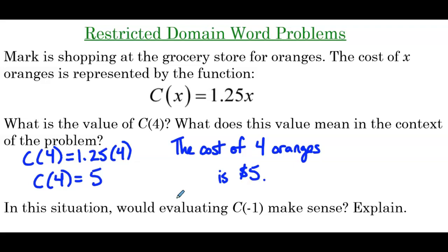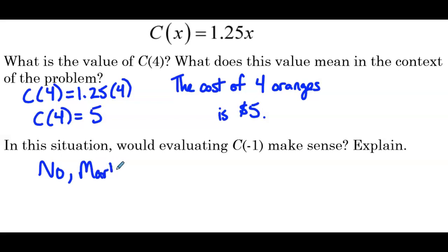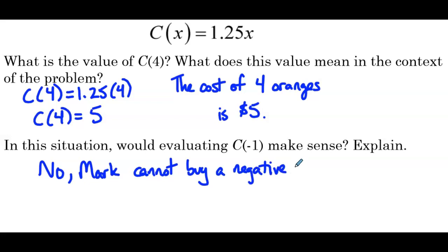In this situation, would evaluating c of negative 1 make sense? The answer is no, and our explanation has to do with the fact that he's buying oranges. He's at the store buying oranges — he's not going to go to the store and give them an orange. Mark cannot buy a negative number of oranges.